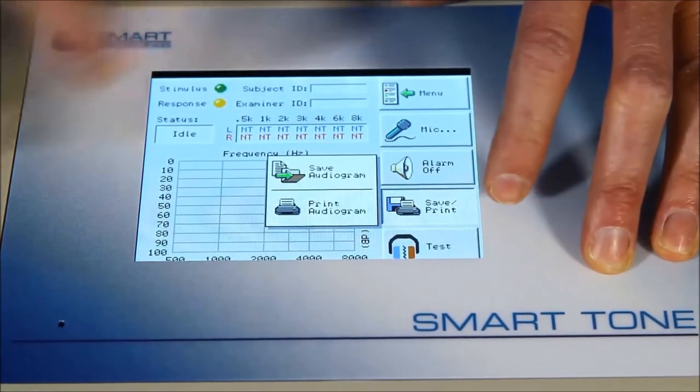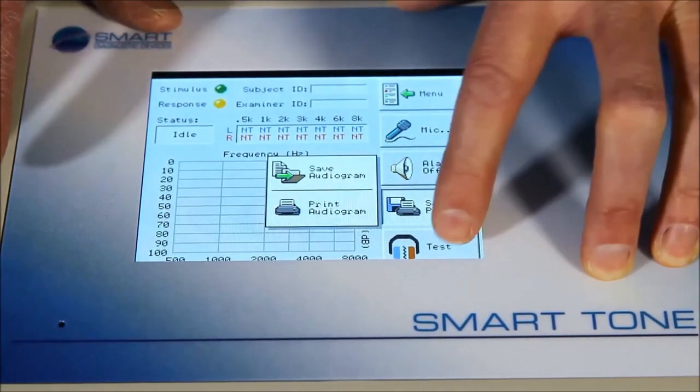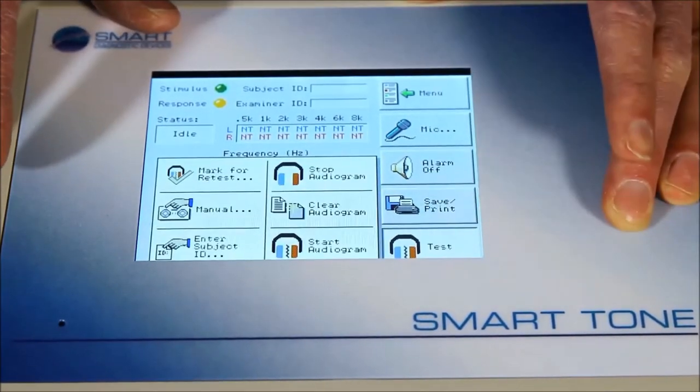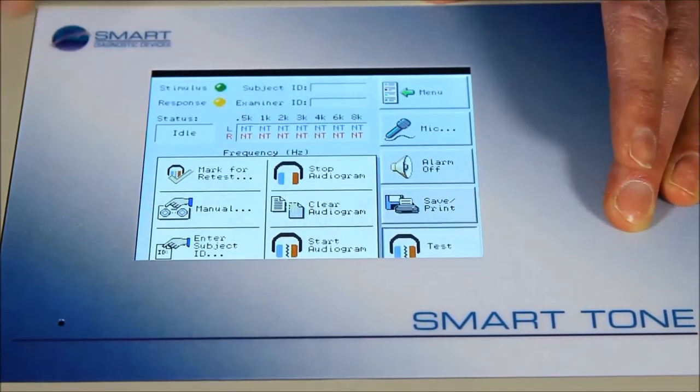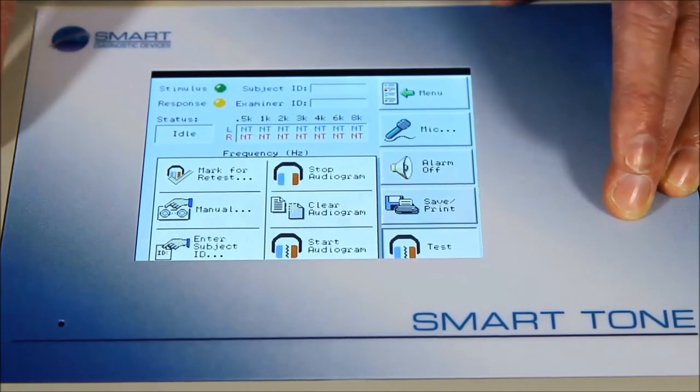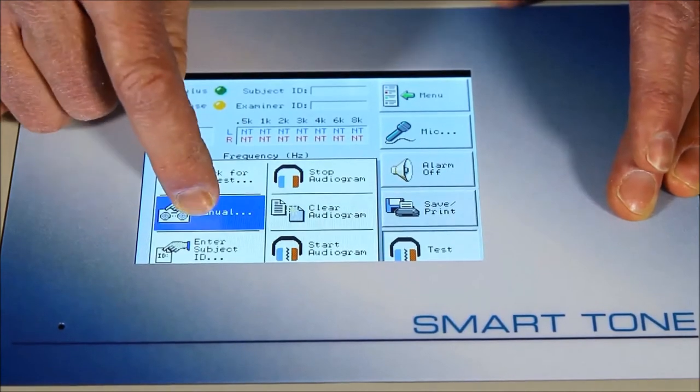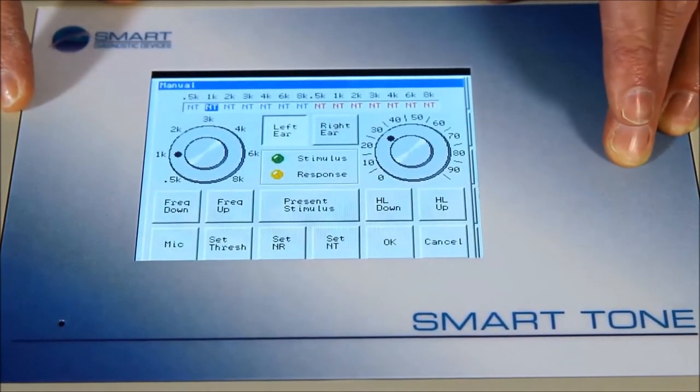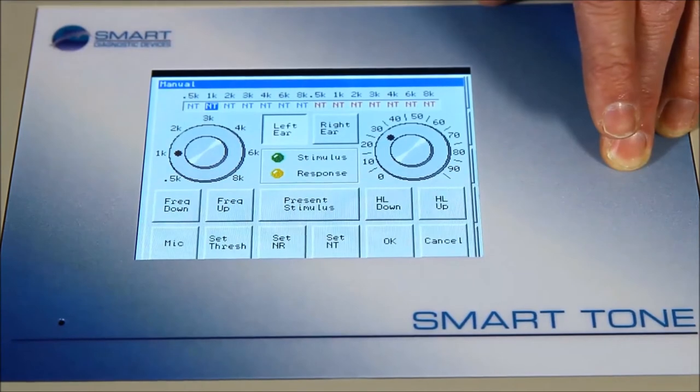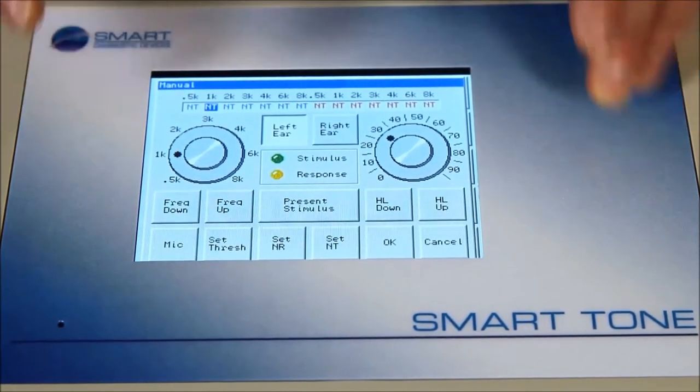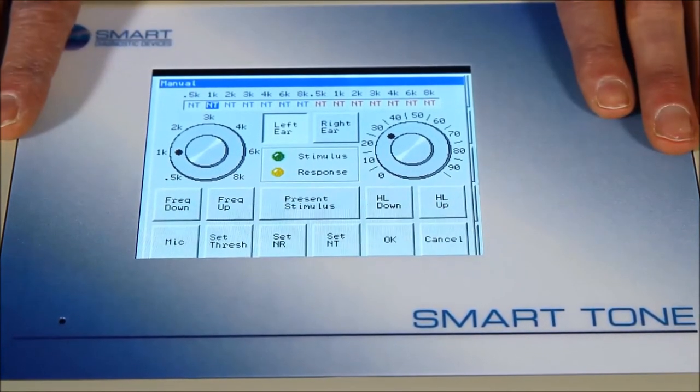And then at the end, when you have a test, you can save it or automatically print it. The test button allows us to start a test, stop a test, clear a test when it's done, enter the subject ID, or go into the manual mode where you can present the tones and the different sound levels manually if someone's struggling with a test.